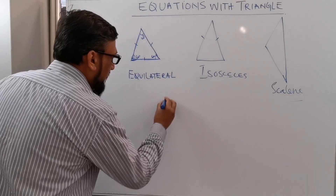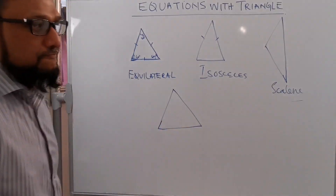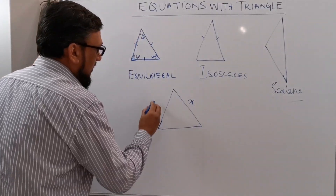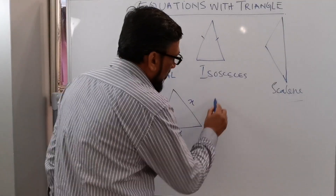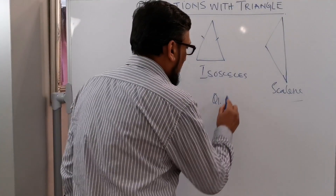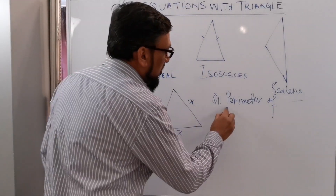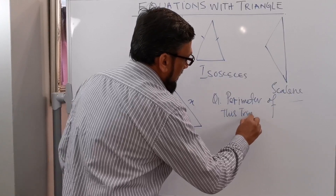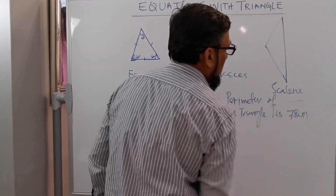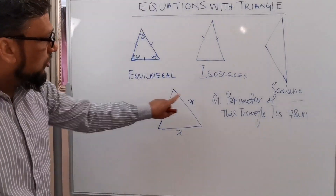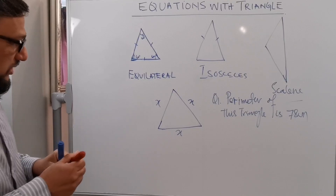Now I'm going to discuss how we can work out equations with triangles, so let me take an example. This is an equilateral triangle, and the value of this side is x, this one is also x, and this one is also x. The question asks: what is the perimeter of this triangle?